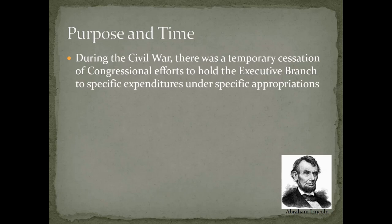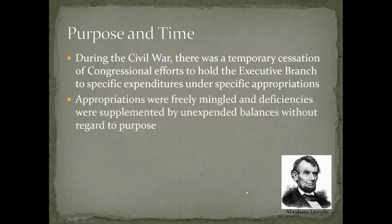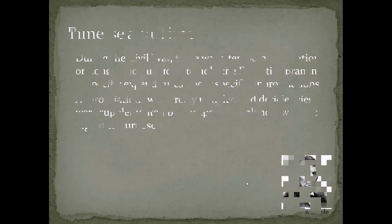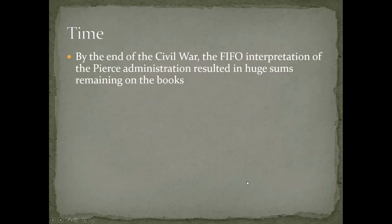During the Civil War there was a temporary cessation of congressional efforts to hold the executive branch to specific expenditures under specific appropriations. Appropriations were freely mingled and deficiencies were supplemented by unexpended balances without regard to purpose. But by the end of the Civil War, the first-in, first-out interpretation of the Pierce administration resulted in huge sums remaining on the books.